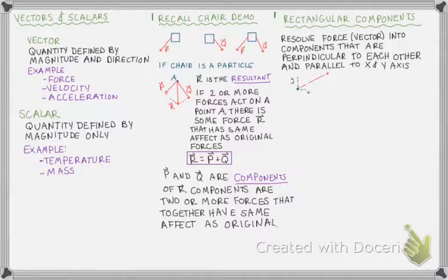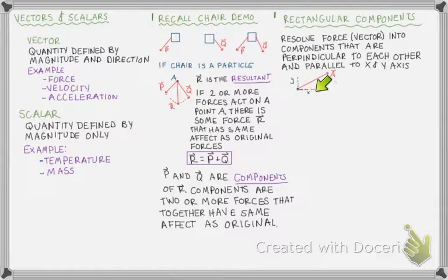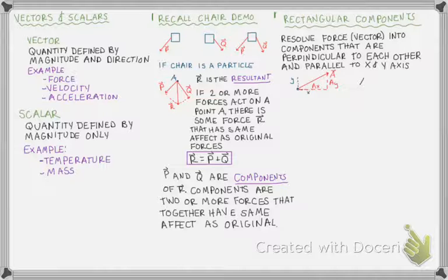So if I have some vector A that acts in a coordinate system defined by X and Y, I can resolve this into two components AX and AY, which act along the X and Y axes, and then I can write A equals AX plus AY. That is rectangular components.